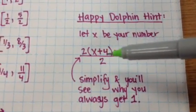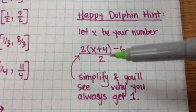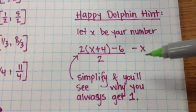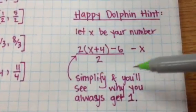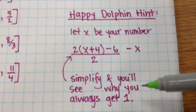let x be the number that you were thinking about. And remember, you're supposed to add 4 and then multiply by 2, then subtract 6, then divide by 2, and then subtract your number. If you simplify this algebraic expression, you will definitely see why you always get 1. It'll make a lot of sense.